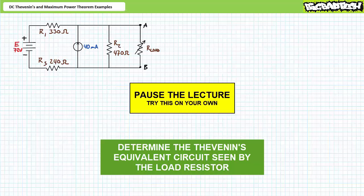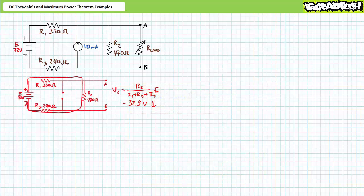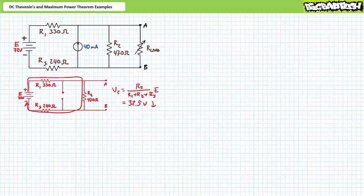By all means, pause and try stage one on your own. If you're tracking, you should obtain the following results. Let's first solve for ETH, Thevenin's equivalent voltage — this will take two steps because we have two sources. First, let's solve from the perspective of the voltage source by removing the current source, replacing it with an open circuit, and also removing the load resistor. The modified circuit is the series combination of R1, R2, and R3, and the open circuit voltage is the voltage across V2. An application of the voltage divider rule demonstrates that V2 is 32.5 volts, oriented positive to negative, top to bottom.